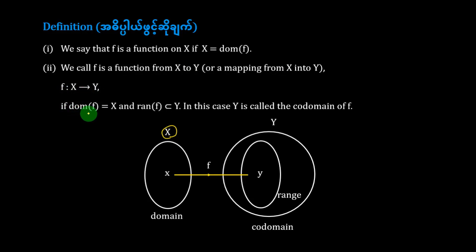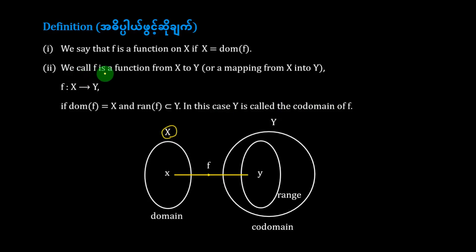If f is equal to h, and h is a function on h, and f is a set — in this case, one is called the good domain of f. In the definition, f is a function from h to one, and h is a function from h to one.